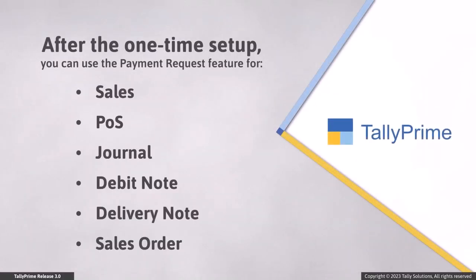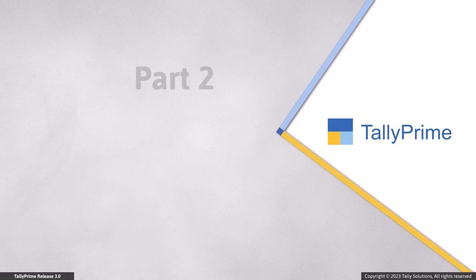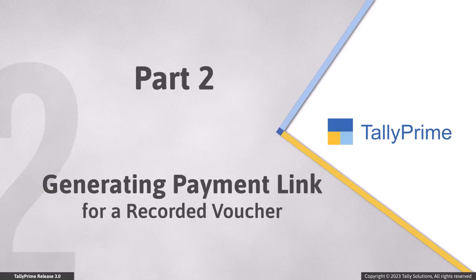You are now ready to use the feature for Sales, POS, Journal, Debit Note, Delivery Note, and Sales Order voucher types. Now, let's see how to generate a payment link from the voucher alteration screen of an already recorded voucher.